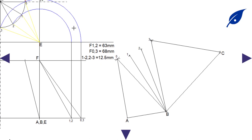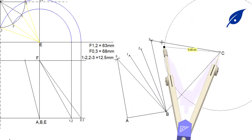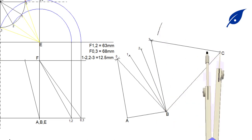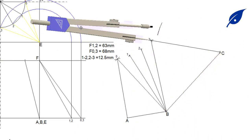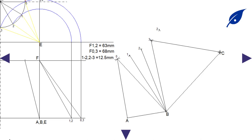Moving to the next point: the distance c–2 is 63 millimeters, so we describe an arc there. The distance between points 3 and 2 is 12.5 millimeters, so where they meet we get point 2 and connect line c–2. After doing that we also repeat the process for points 1 and 0, getting lines c–1 and c–0.